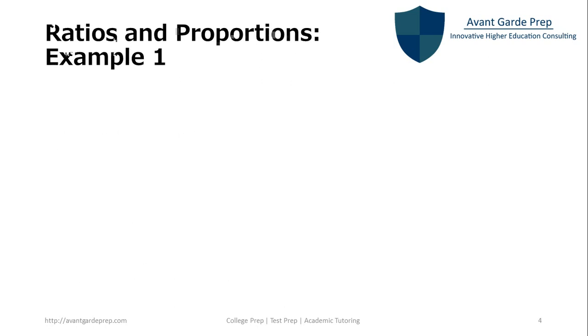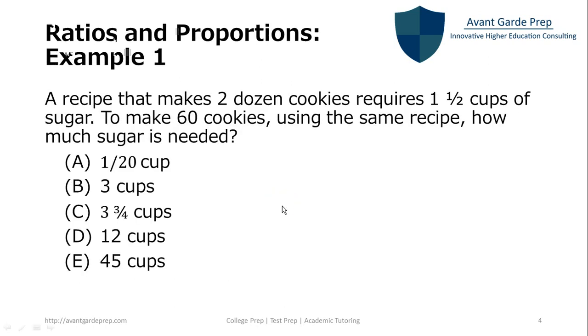Let's take a look at our first example. This problem states, a recipe that makes two dozen cookies requires one and a half cups of sugar. To make 60 cookies using the same recipe, how much sugar is needed?